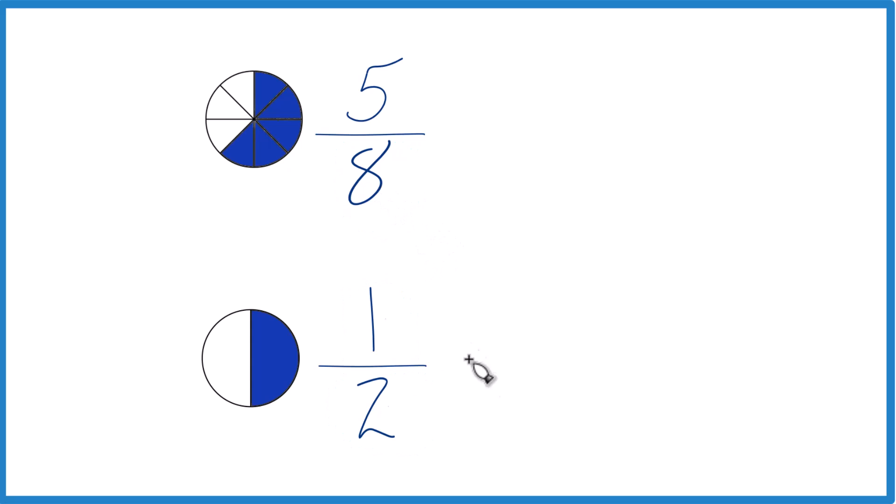So it looks like if I multiply 2 times 4, that's going to equal 8. And since I multiplied 2 times 4, I did the denominator, I do need to also multiply the numerator. 1 times 4 is 4. So we get 4 eighths, that's the same as 1 half.